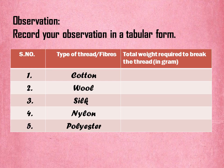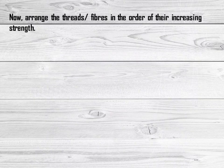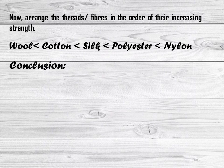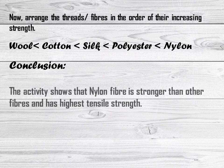Record your observations in a tabular form. Arrange the threads in order of increasing strength. You will see that wool is less strong than cotton, cotton is less strong than silk, silk is less strong than polyester, and nylon is the strongest fiber among them all. Conclusion: the activity shows that nylon fiber is stronger than other fibers and has the highest tensile strength.